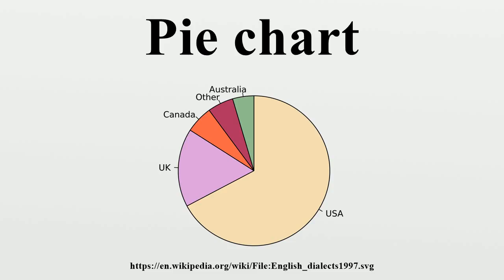A variant of the polar area chart is the speed chart. This superimposes a normal pie chart with a modified polar area chart to permit the comparison of two sets of related data. The base pie chart represents the first data set in the usual way, with different slice sizes. The second set is represented by the superimposed polar area chart, using the same angles as the base, and adjusting the radii to fit the data.